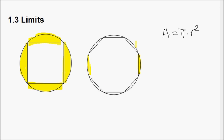Now if we take a polygon that has double the number of sides of the square — so an octagon — as you can see in the image on the right, the polygon is covering more of the area of the circle, leaving a lot less of the circle uncovered. Now if you continue this process using more and more sides, the area of the polygon is going to get closer and closer to the area of the circle, approaching the area of the circle but never exceeding it.